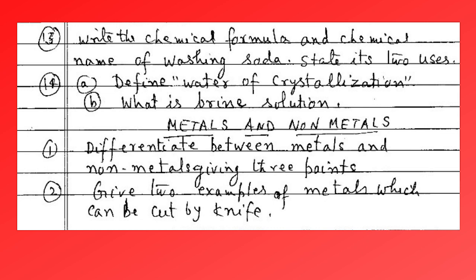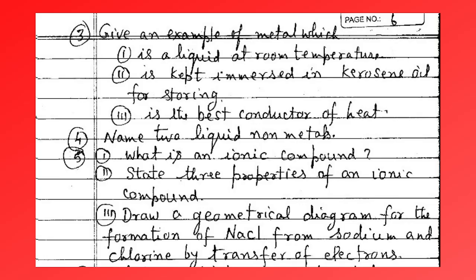Then we go to the chapter on metals and non-metals. Differentiate between metal and non-metal giving three points. Give two examples of metals which can be cut by a knife. Give the example of a metal which is liquid at room temperature, is kept immersed in kerosene oil for storing, and is the best conductor of heat. Name two liquid non-metals. What is an ionic compound? Name three properties of an ionic compound. Draw a diagram for the formation of sodium chloride from sodium and chlorine by transfer of electrons.